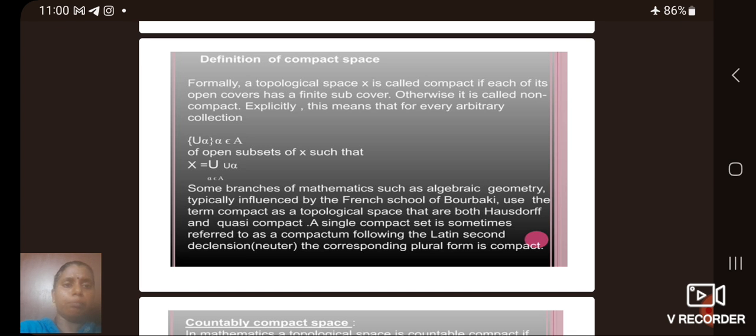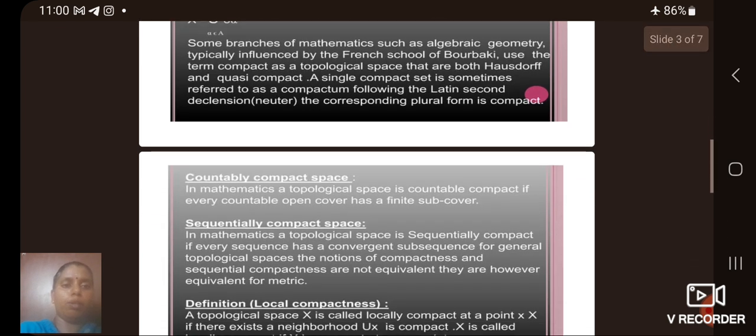Some branches of mathematics, such as algebraic geometry, typically influenced by the French school of Grothendieck, uses the term quasi-compact for a topological space that are both Hausdorff and quasi-compact. A single compact set is sometimes referred to as a compactum following the Latin second neuter, the corresponding plural form is compacta.